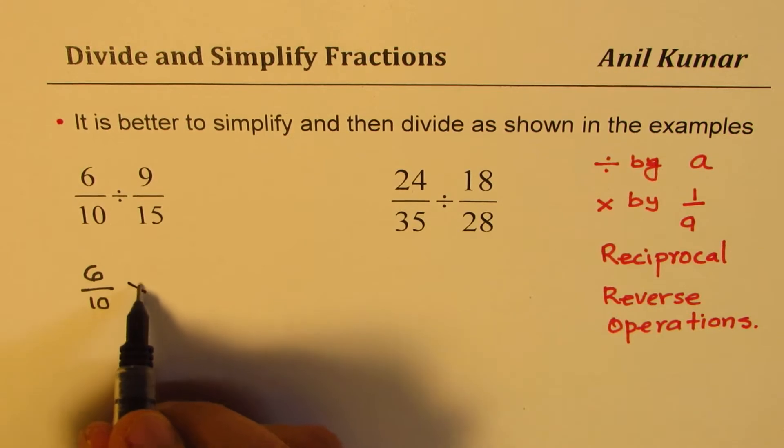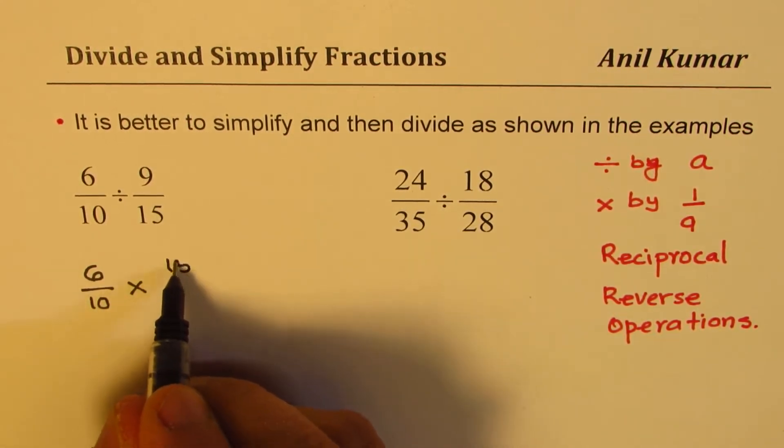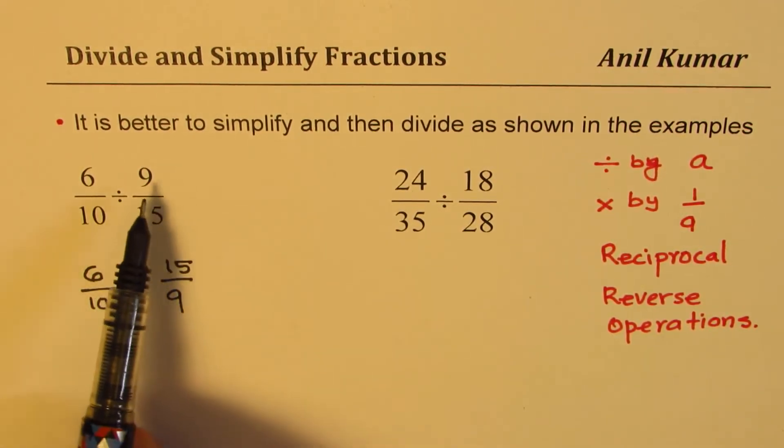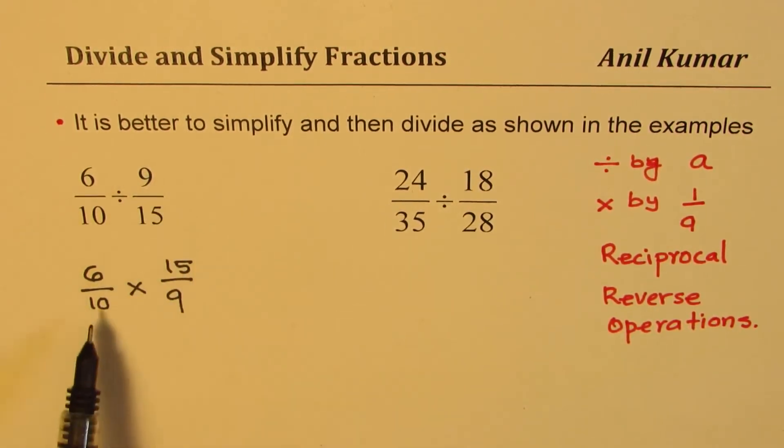So this could be written as multiply by flip it over, write 15 over 9. So that is what I mean by reciprocal—you just flip it over. Numerator becomes denominator, denominator becomes numerator.